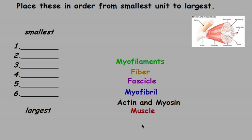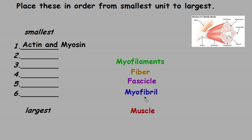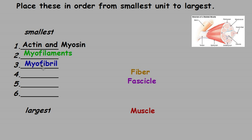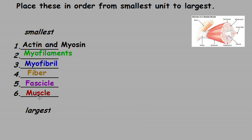Pause the video and see if you can place these structures in order from smallest to largest. The smallest are the two proteins, actin and myosin, which are the myofilaments. The myofilaments make up the myofibril. The myofibrils, along with other organelles, make up the muscle fiber or muscle cell. A group of cells together is a fascicle, and a group of fascicles makes up the muscle. That is the order from smallest to largest.